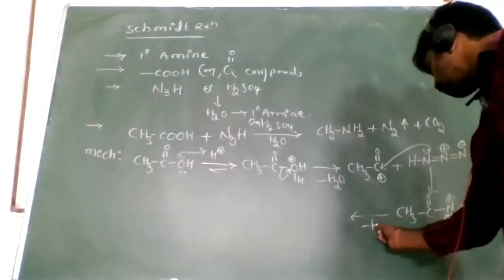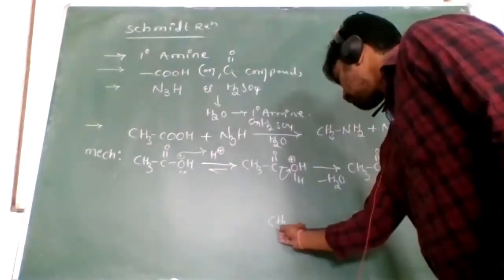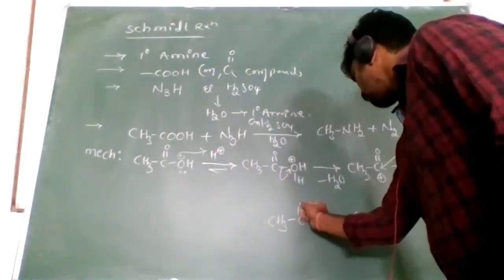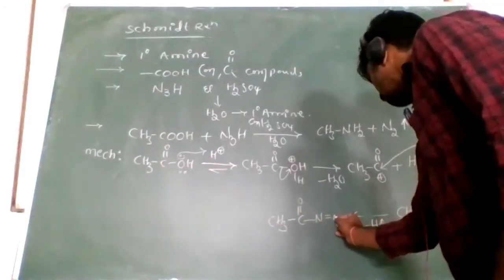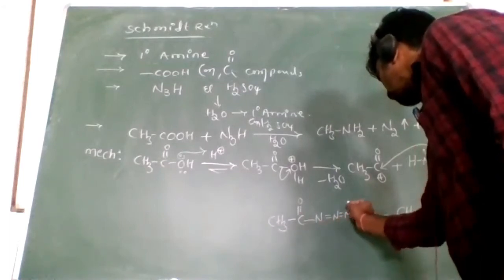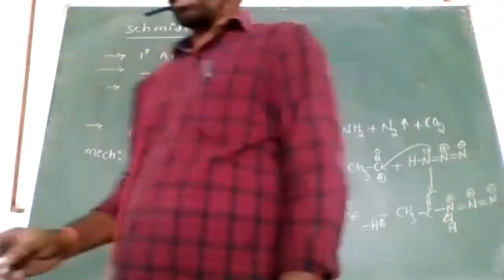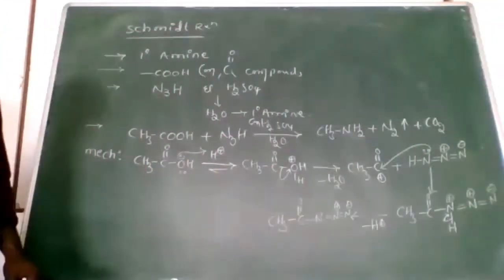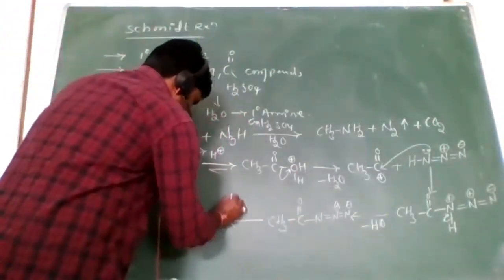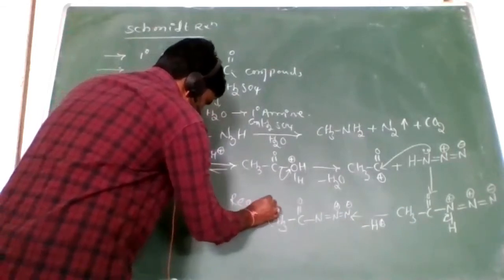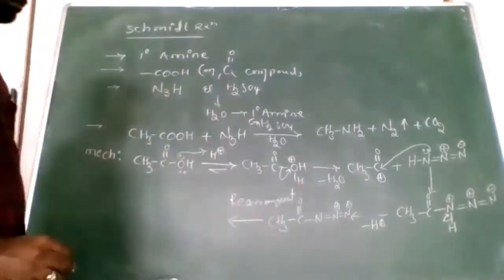The electrons shift to the nitrogen side and H⁺ is removed. We get CH₃C(=O)–N=N⁺=N⁻. Now this intermediate goes to rearrangement.